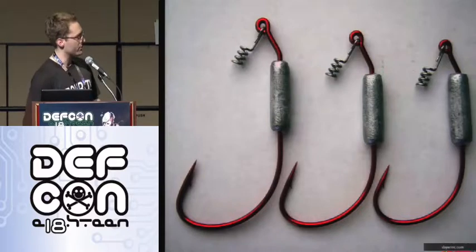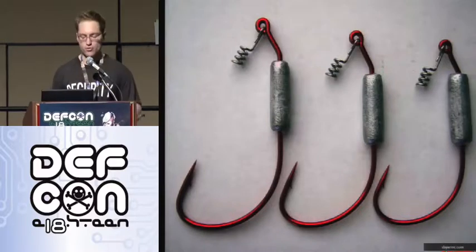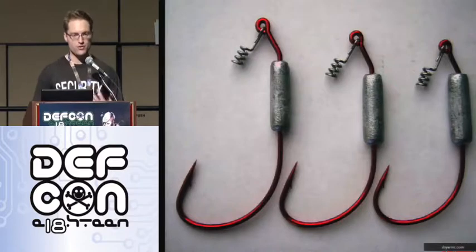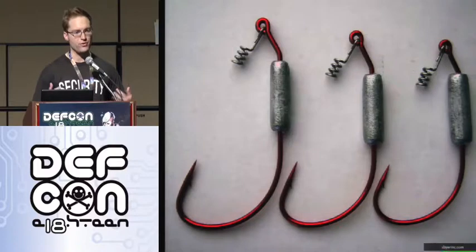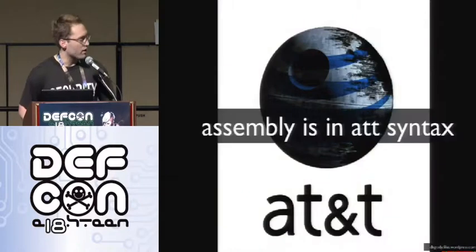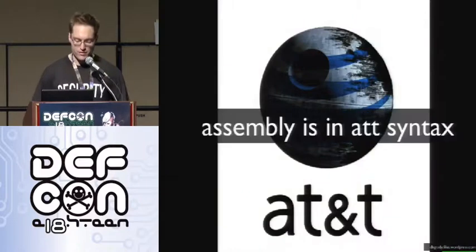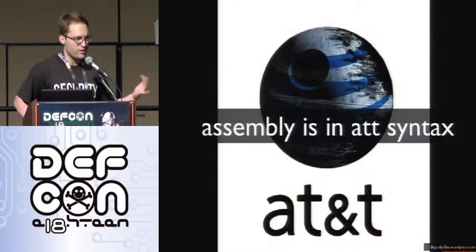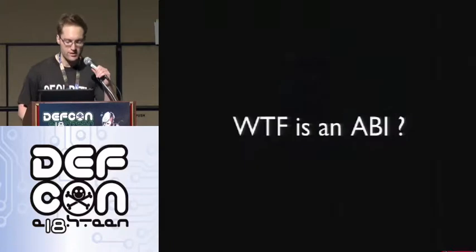This talk is about three function hooking techniques that I researched and implemented to build a Ruby memory profiler. But since I know there's people in the audience that don't really give a shit about performance analysis and memory profilers, there's also an evil example at the end of what these things can be applied to. So just a quick note before we get rolling: there's a lot of assembly code in this talk and it will all be in AT&T syntax.